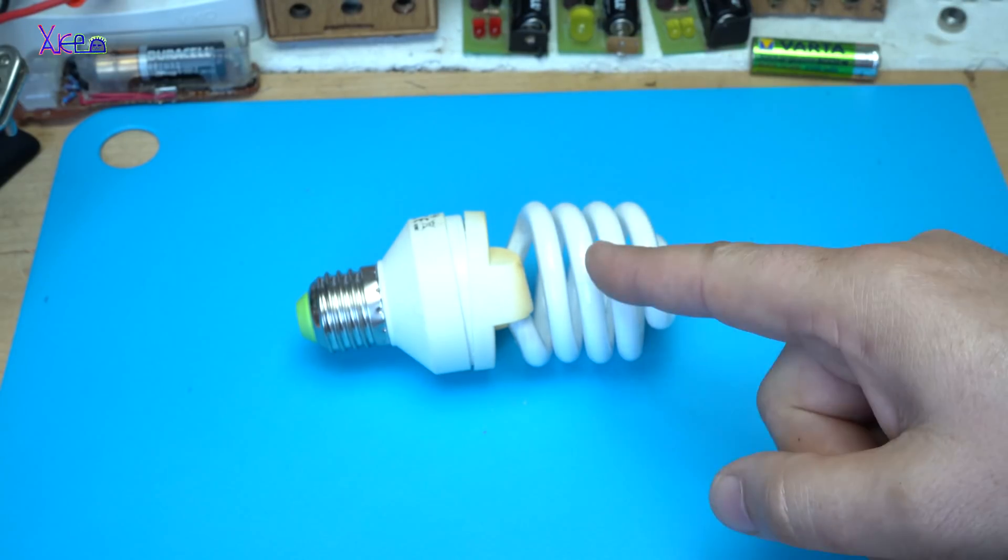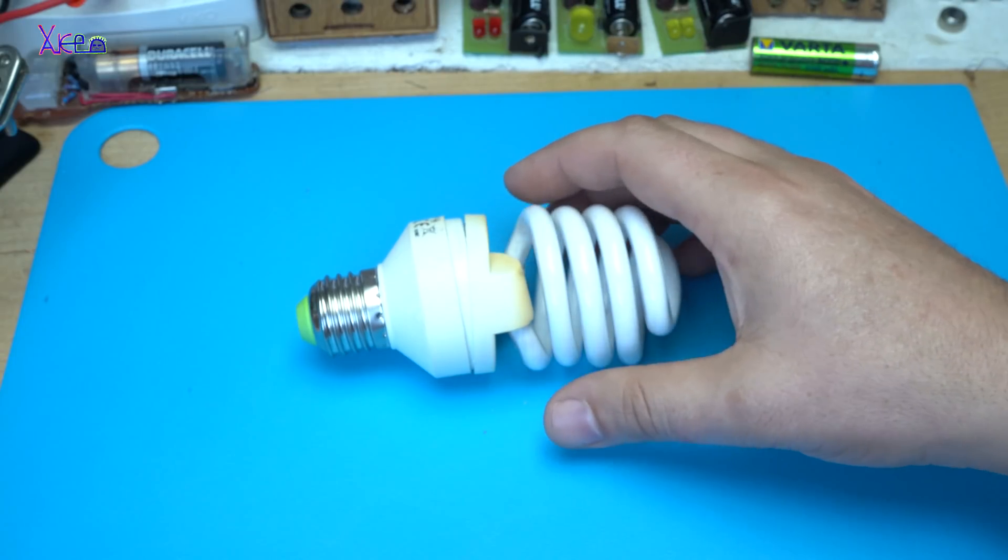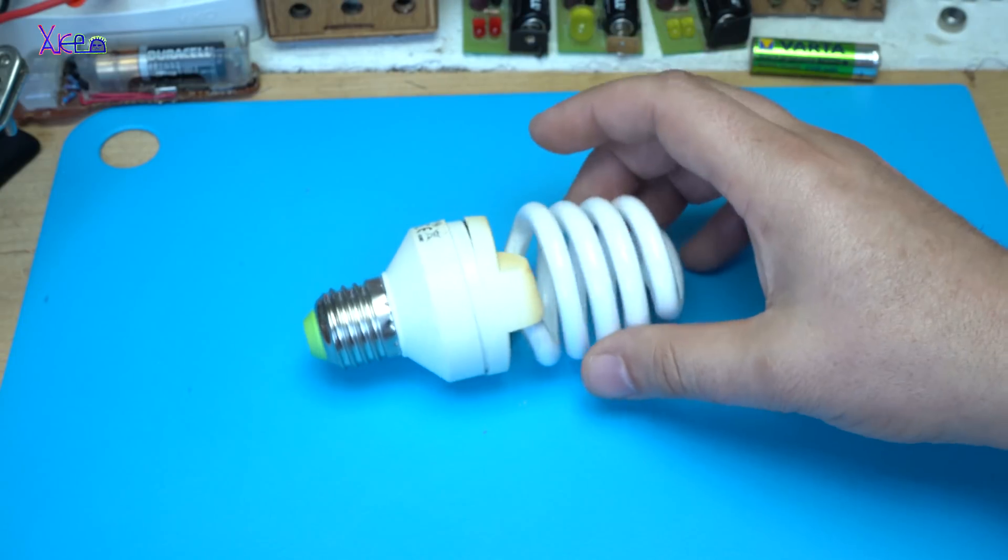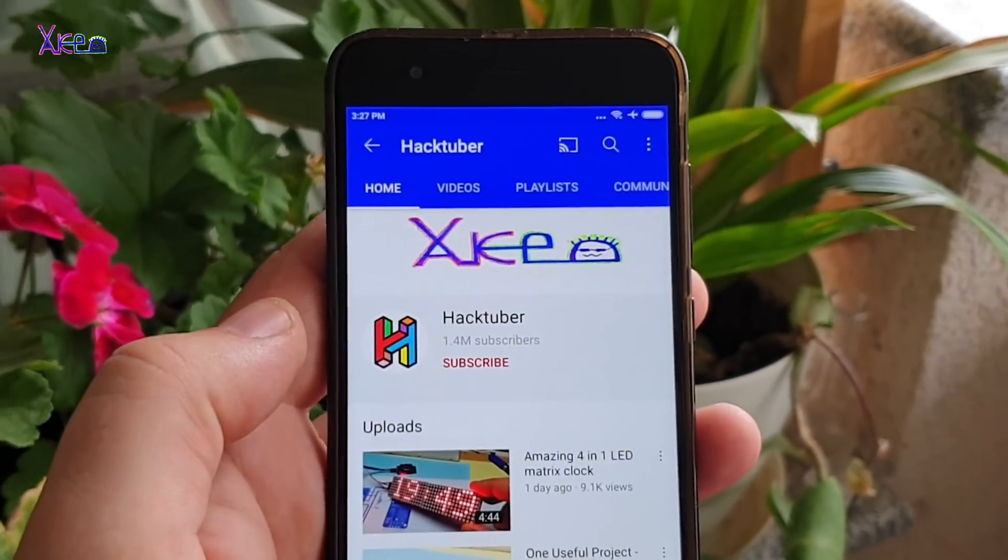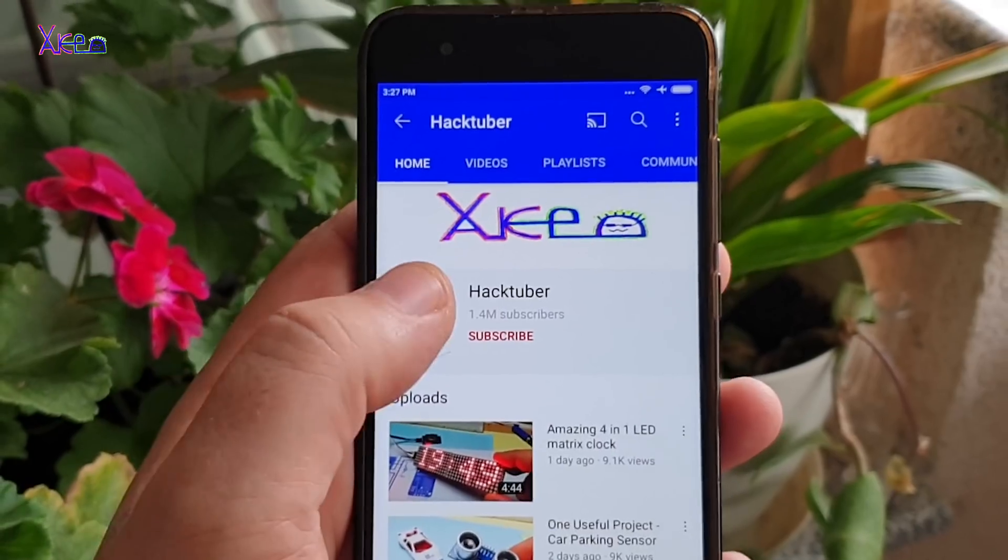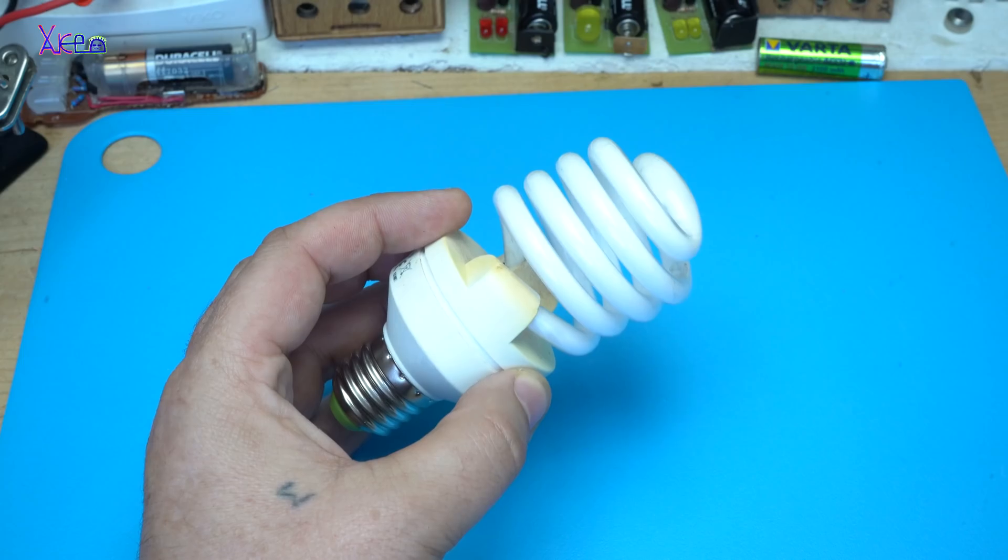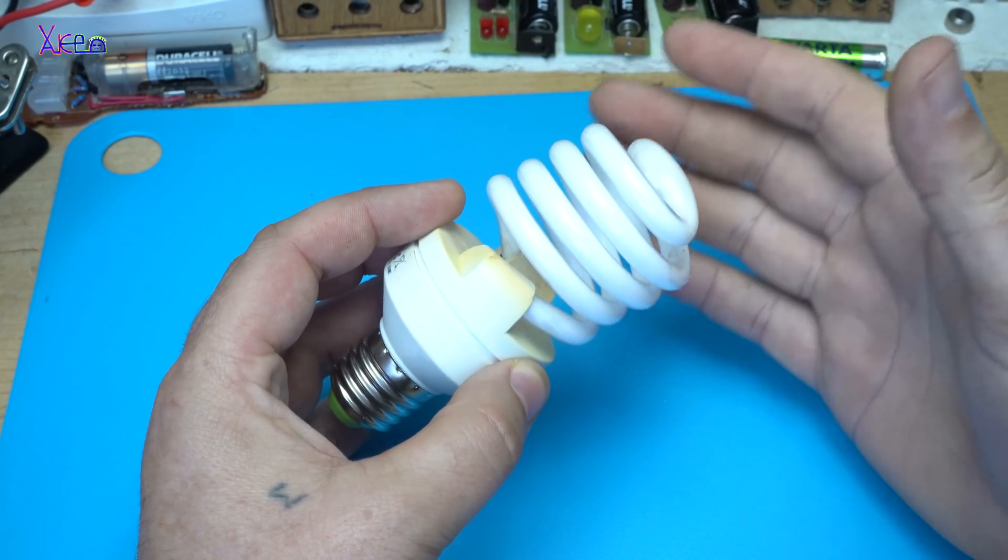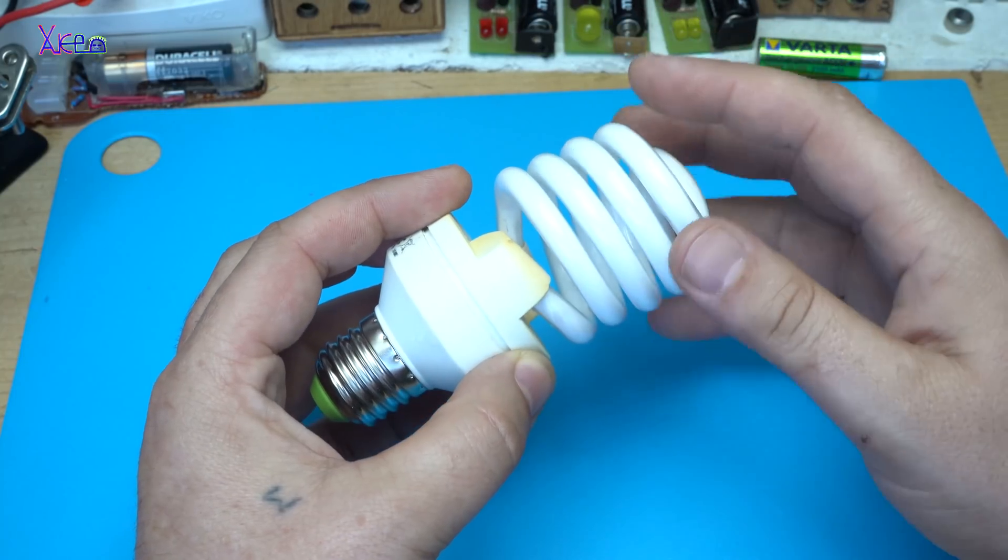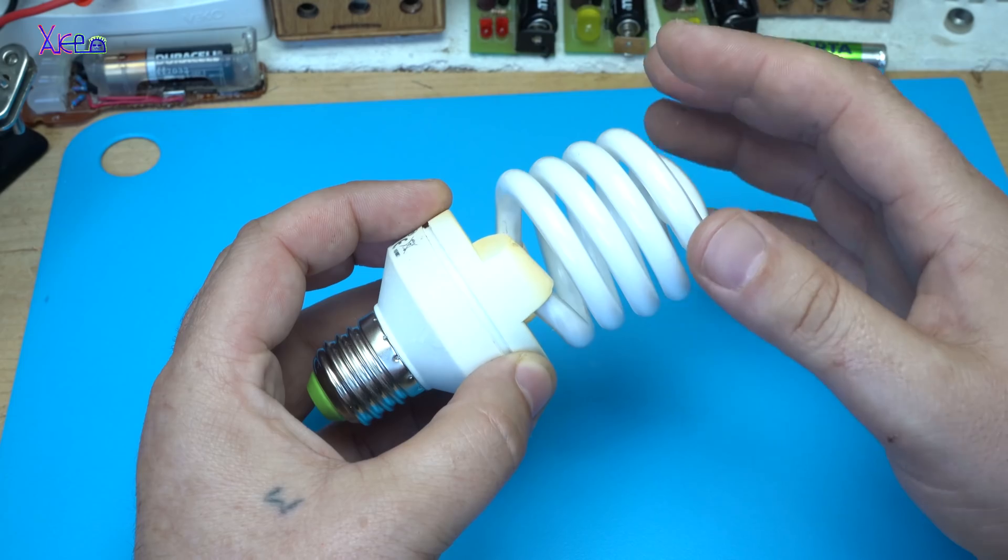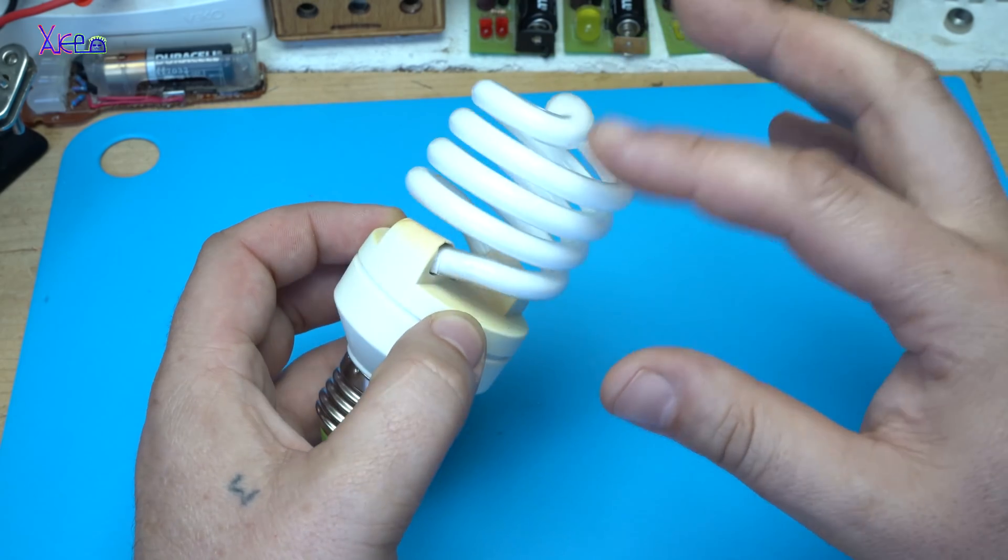Today's project will be about what you can do from old CFL bulb. Subscribe to my channel and watch hundreds of DIY videos. First that you need to do is to open the case of the CFL bulb. And please be careful not to break the glass.